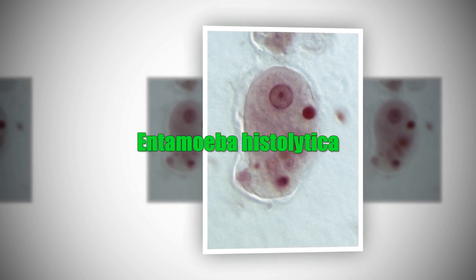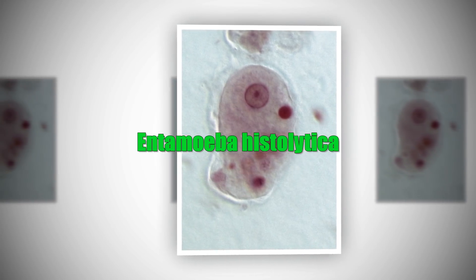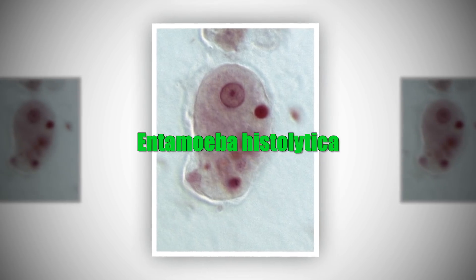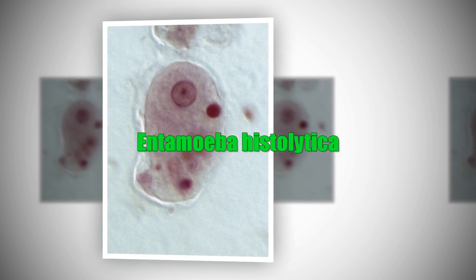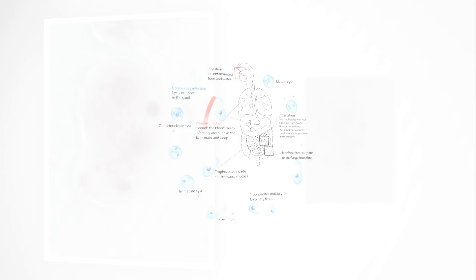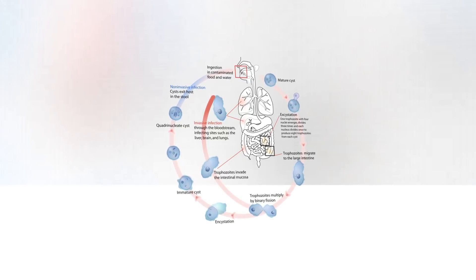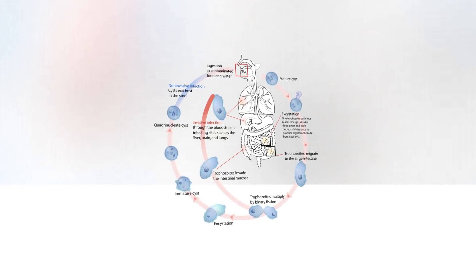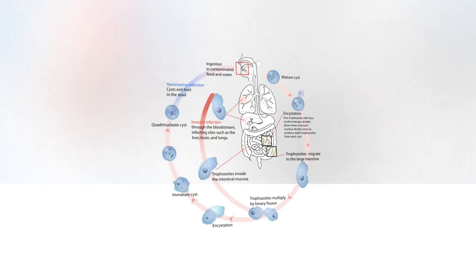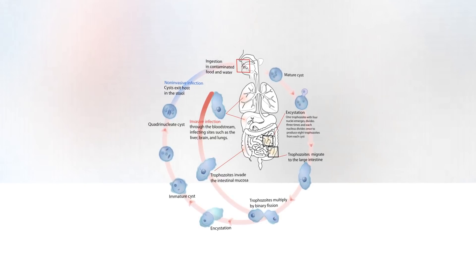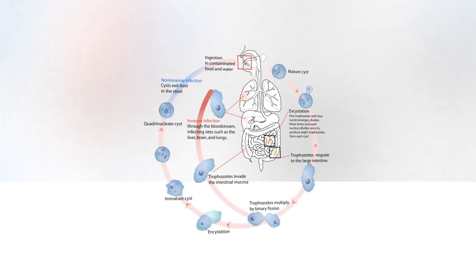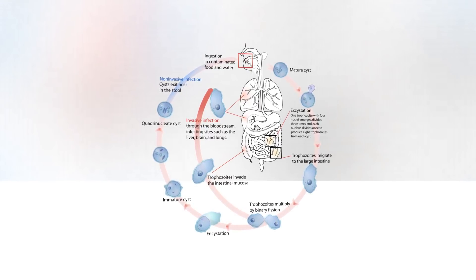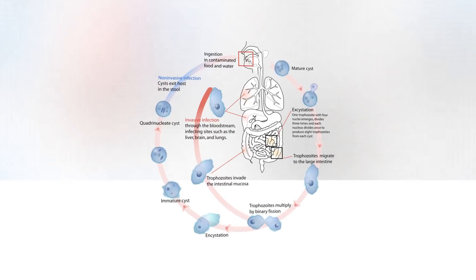Entamoeba histolytica. This parasite is the primary cause for amoebiasis, or amoebic dysentery, a colon infection marked by abdominal pain and diarrhea. But in some cases, this parasitic infection can lead to a serious heart complication known as amoebic pericarditis, in which it causes abscesses in the pericardium, the sac-like membrane surrounding the heart. People with pericarditis often experience sharp, stabbing chest pain caused by the irritated pericardium walls rubbing against each other.